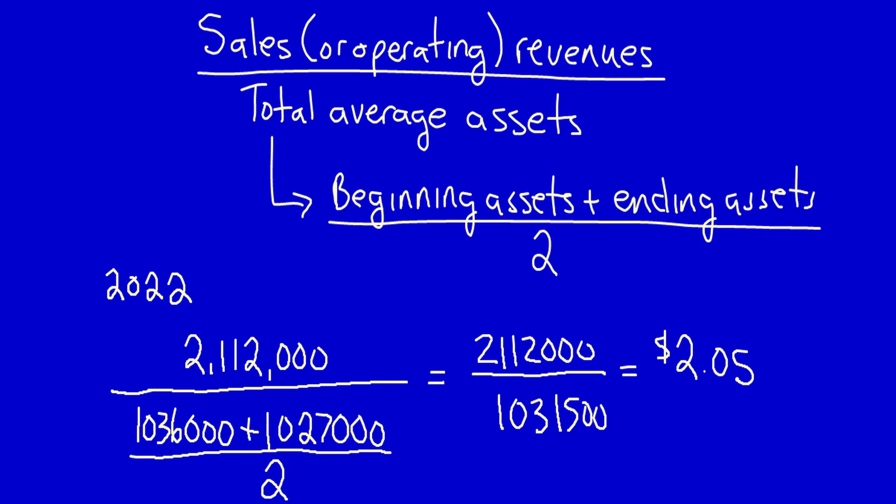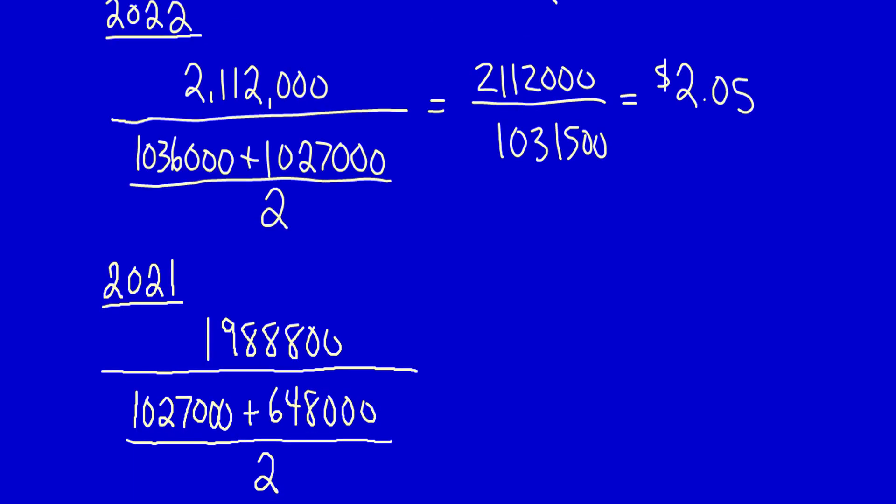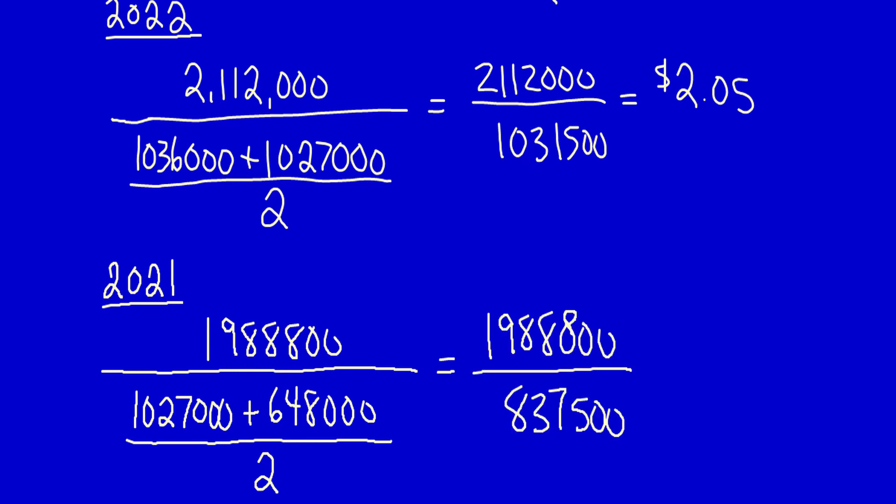I'm going to page down and calculate 2021. Remember where all this information comes from — just look at Orange Inc.'s information. 1,988,800 divided by 837,500 equals $2.37.